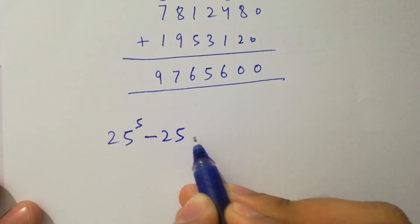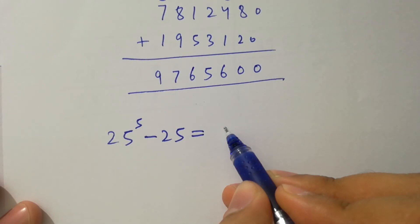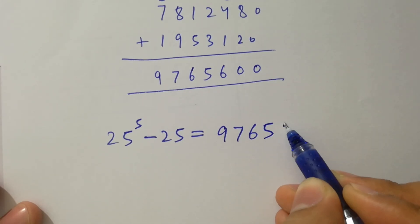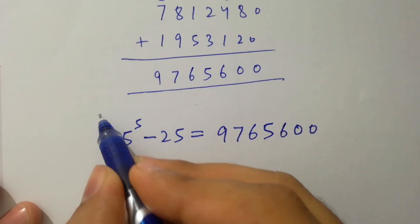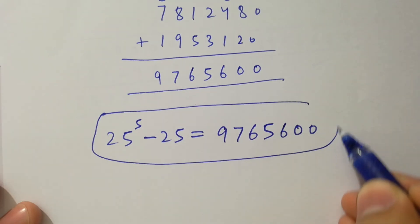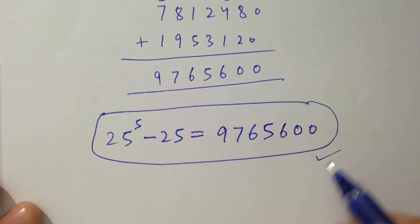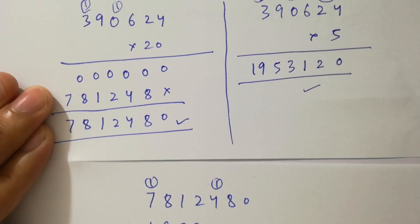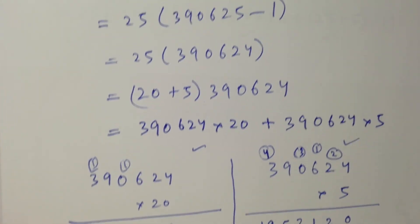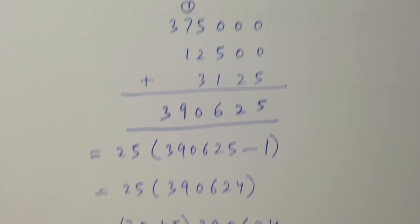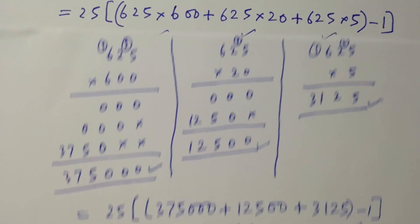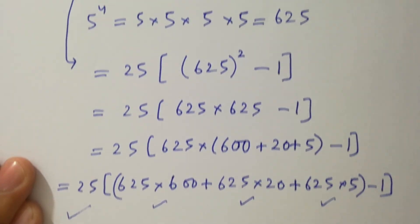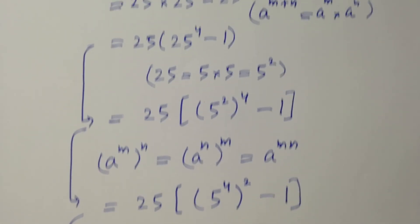So finally, 25 to the power 5 minus 25 equals 9,765,600, which is our final answer. Thanks for watching this video. Please subscribe to this channel to get notifications of new videos, and don't forget to share these videos with your classmates and friends so that they also benefit. Okay, bye.